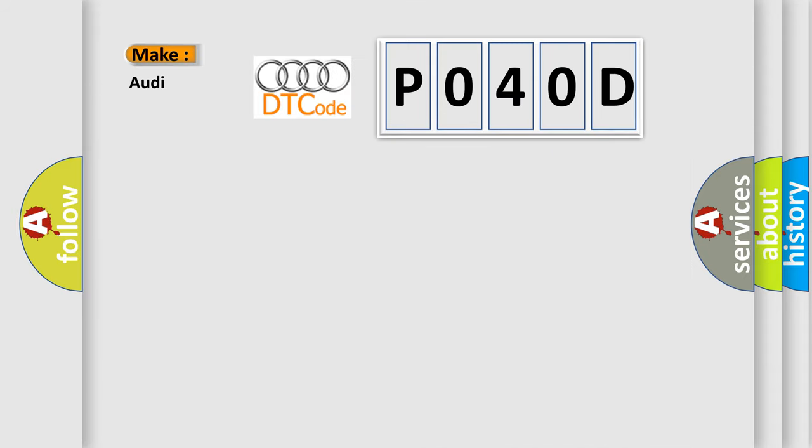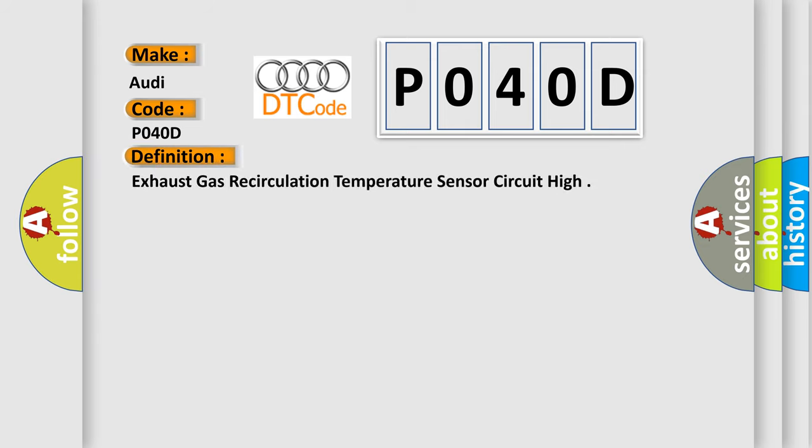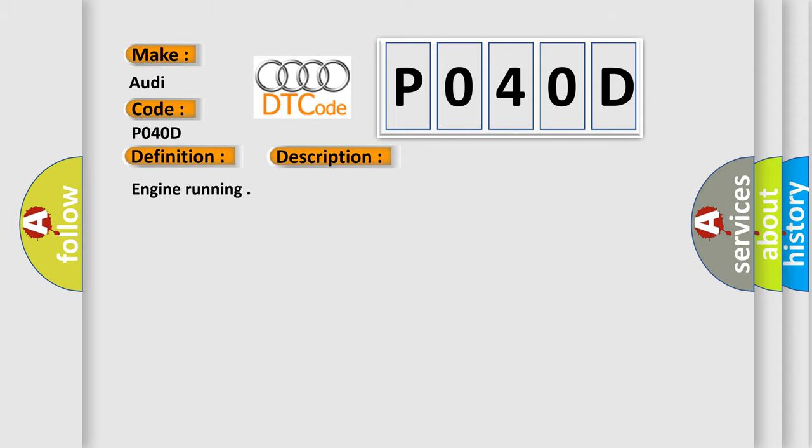So, what does the diagnostic trouble code P040D interpret specifically for Audi car manufacturers? The basic definition is Exhaust gas recirculation temperature sensor circuit high. And now this is a short description of this DTC code.